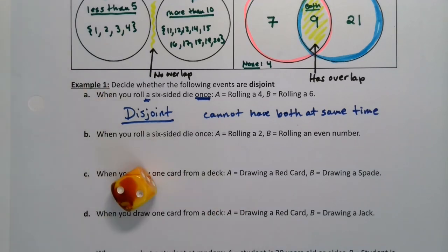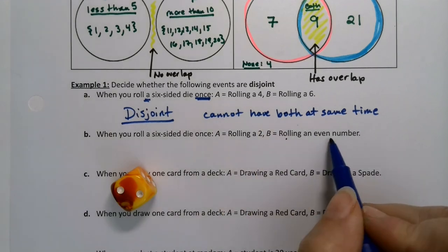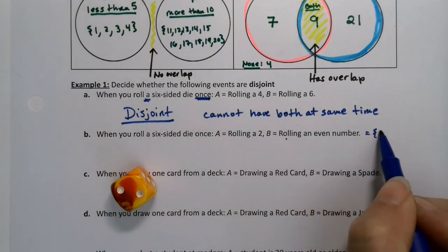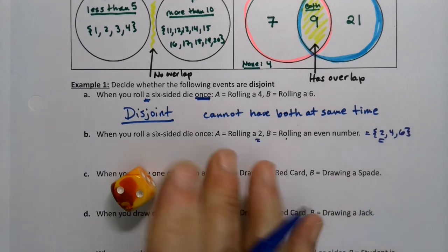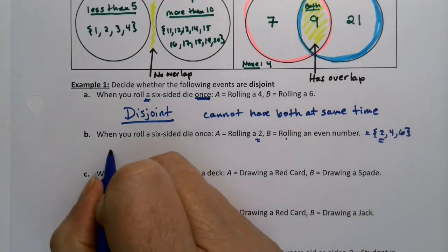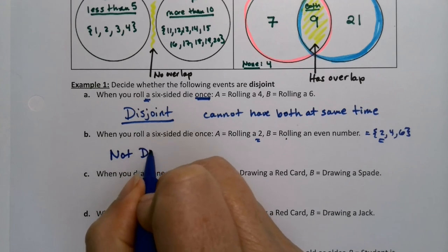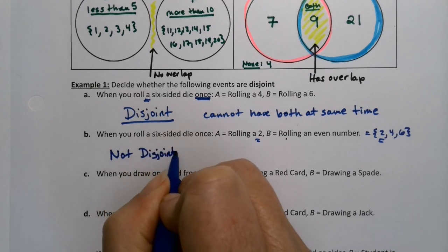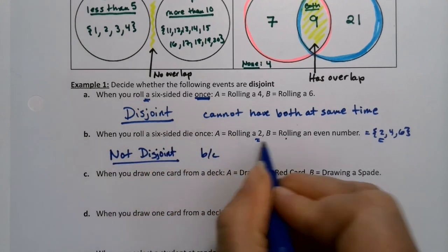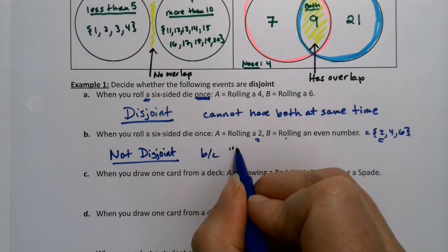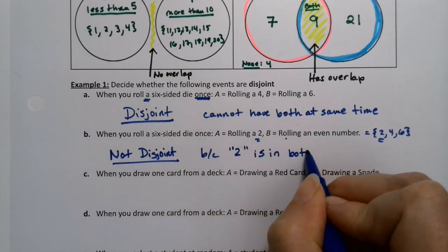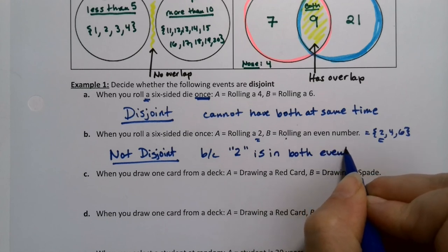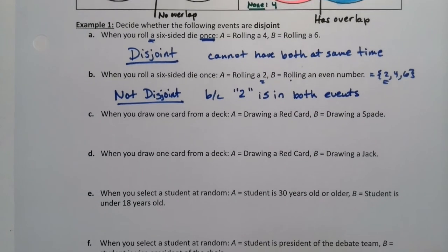You're rolling a six-sided die. Just one six-sided die. You can't do both. What about rolling a two and an even number? So a two is a two. Even numbers are two, four, and six. So they have an overlap. It's two. So this is not disjoint because two is in both events.